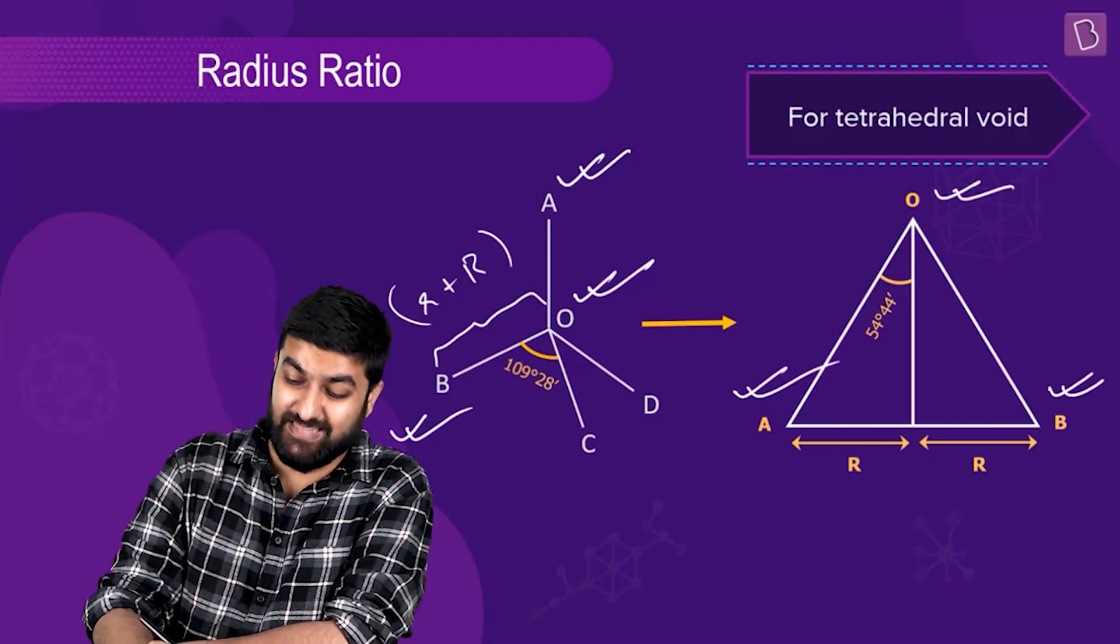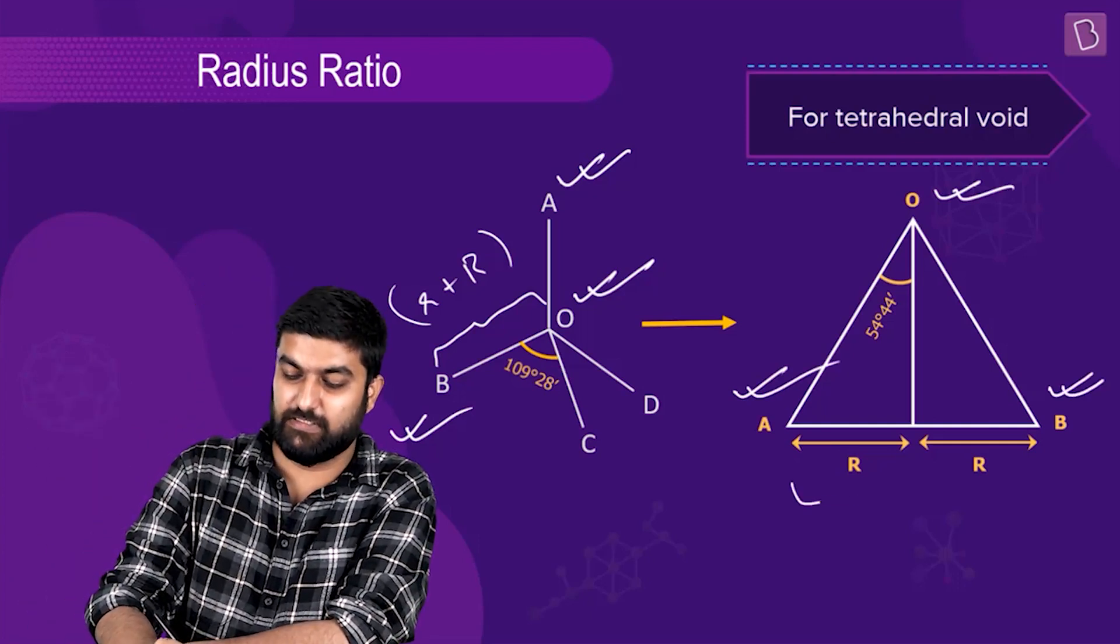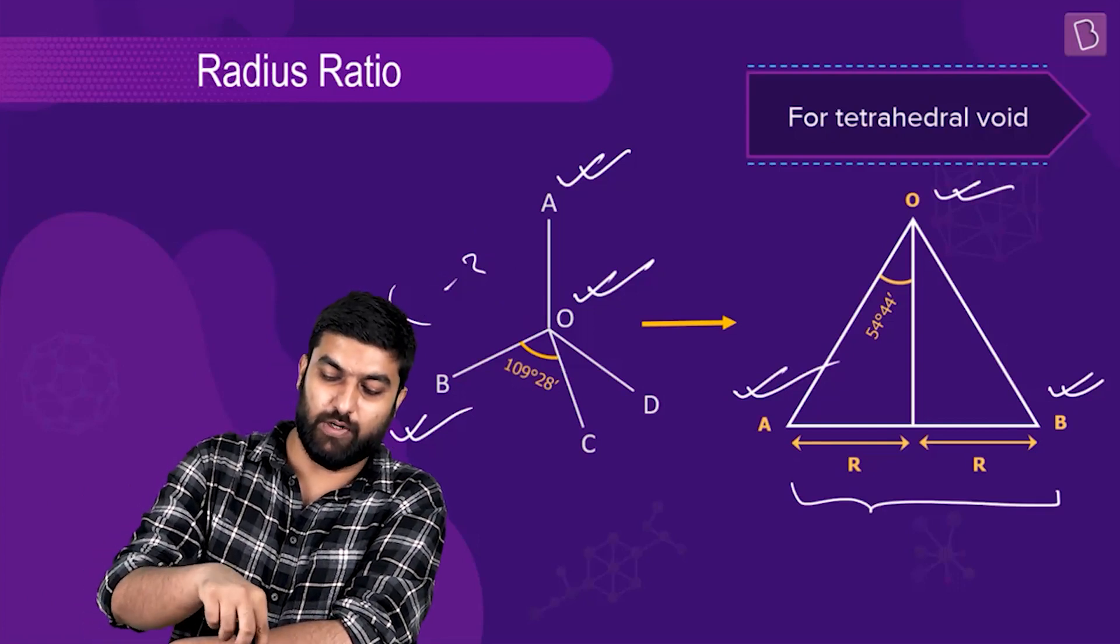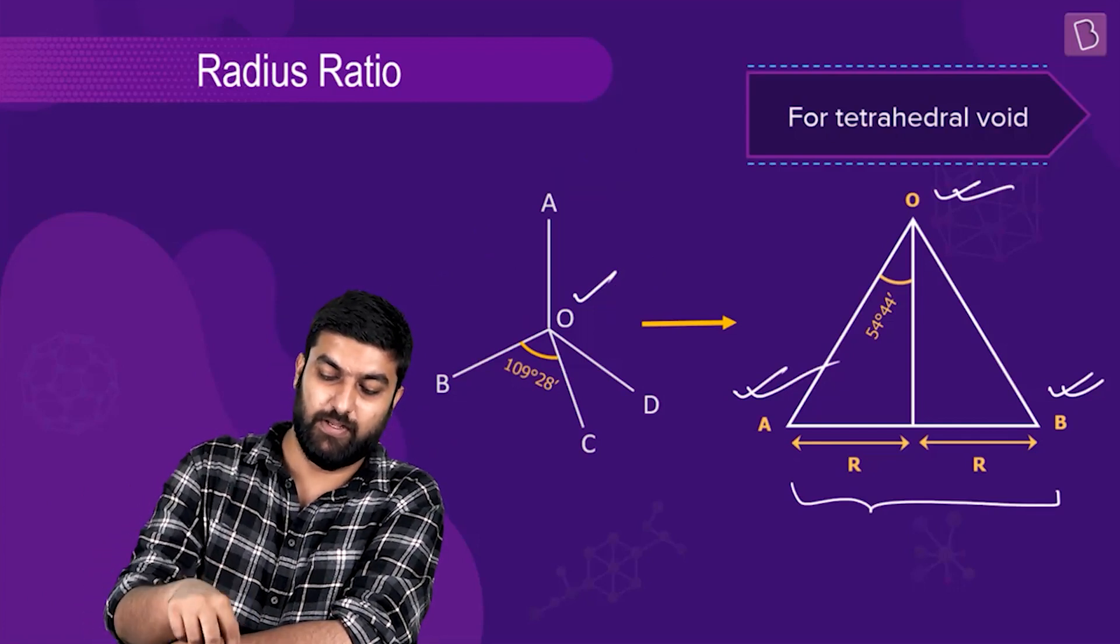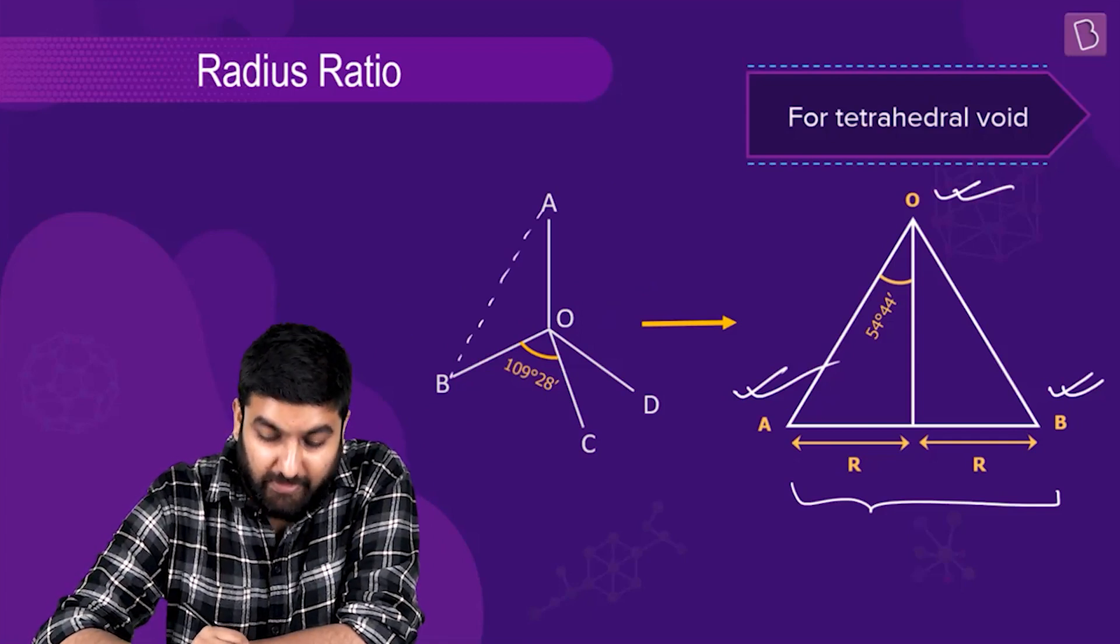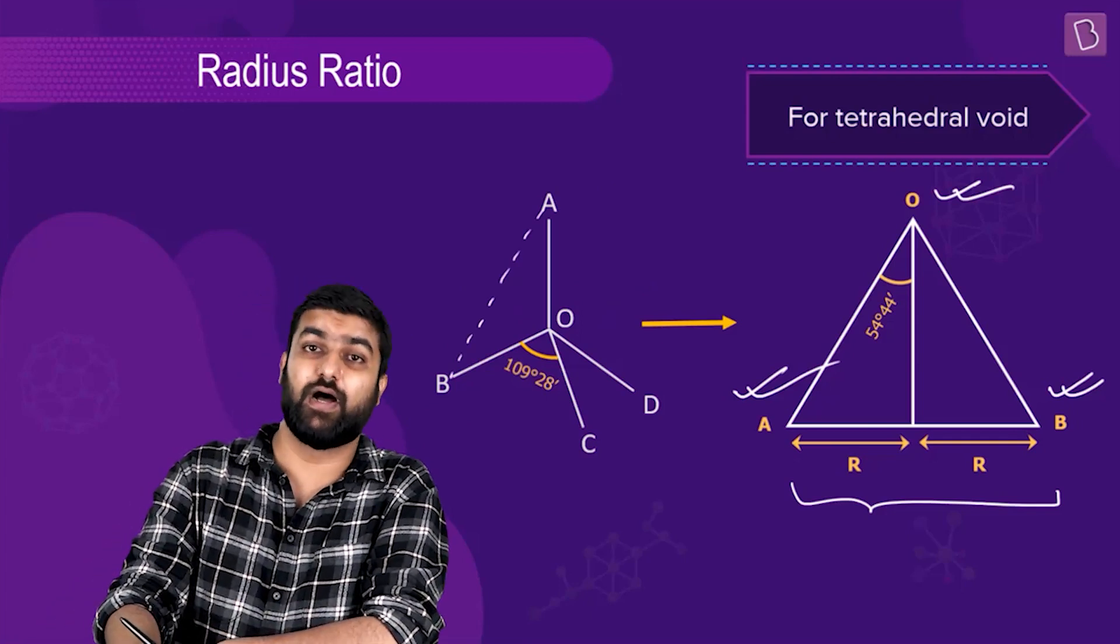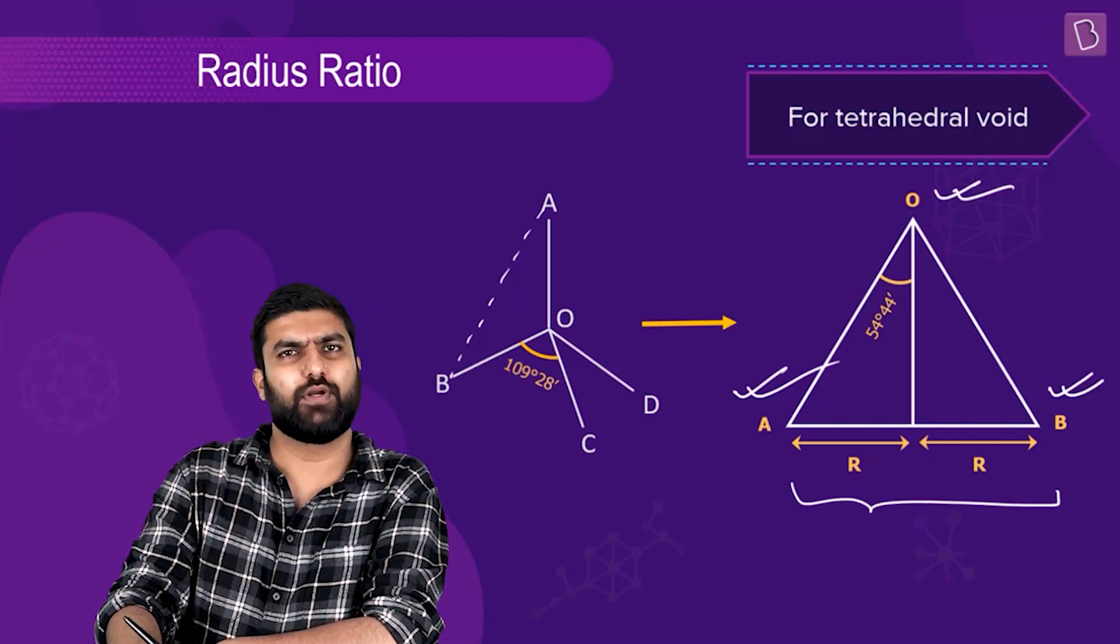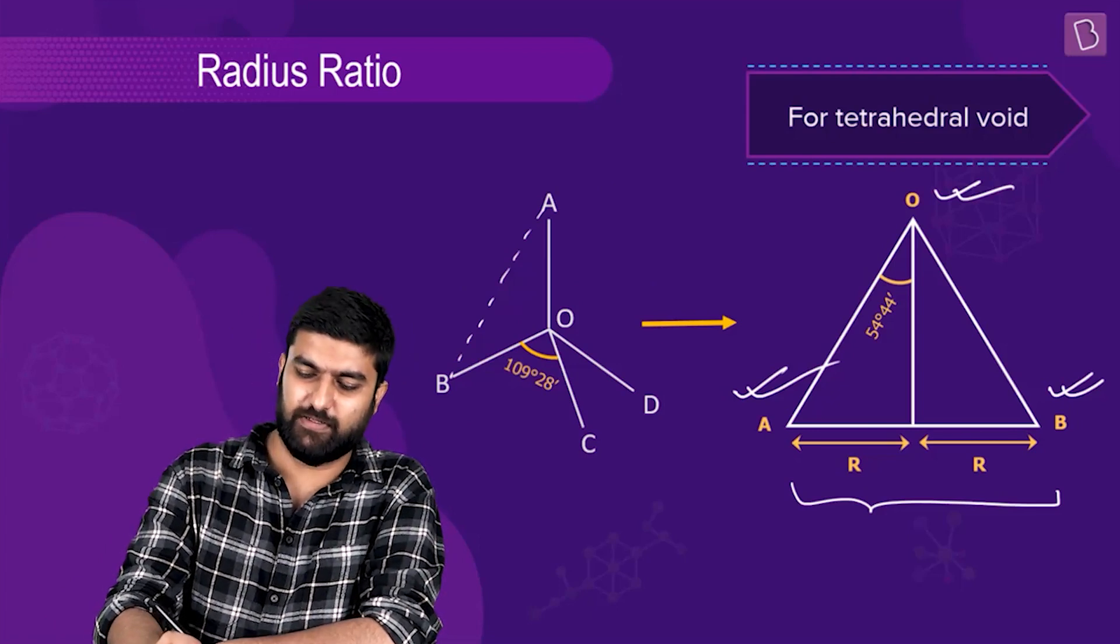Then we said that either of these lengths, OA or OB, becomes equal to r plus R - small r plus capital R. And either of these two angles turn out to be...